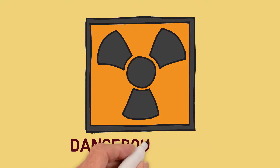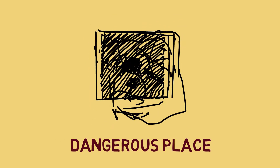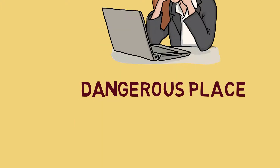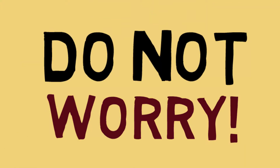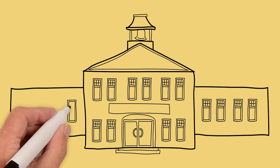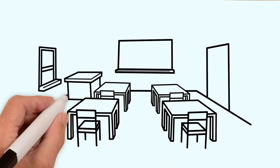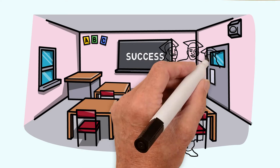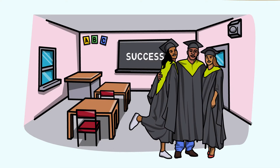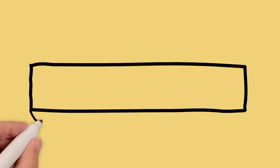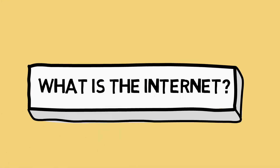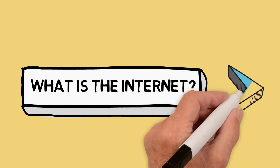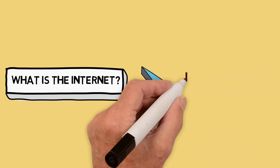However, just like most things in the world, there is always the other side of the coin. The internet is one of the most dangerous places, especially if you do not know what you are doing in it. Nevertheless, there is no need to worry. By the end of this lesson, you should be able to consider how you go about your use of the internet.